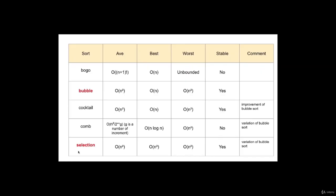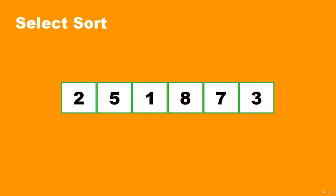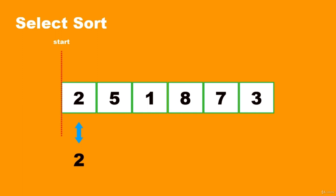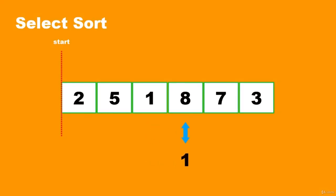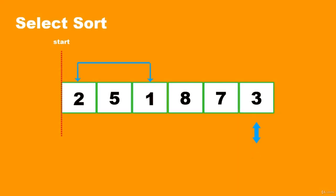This lecture is about selection sort. First, we'll watch a video illustrating the general technique, then introduce how to write the code. At the beginning of our list we have 2. We temporarily mark 2 as the current minimum, then compare it with the next number, 5 — 2 is smaller, so we move on. Next, we compare with 1 — 1 is smaller, so we replace the current minimum with 1. We continue: 8 and 1 (1 is smaller), 7 and 1 (1 is smaller), 3 and 1 (1 is smaller). Now we see that 1 is the smallest number in the list, so we swap it with the first number in the list.